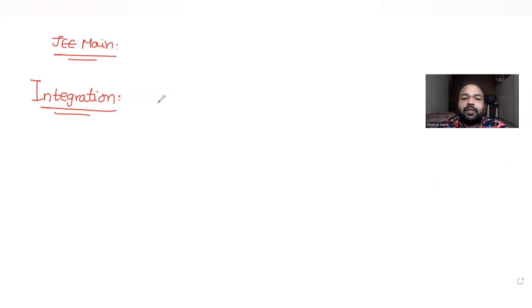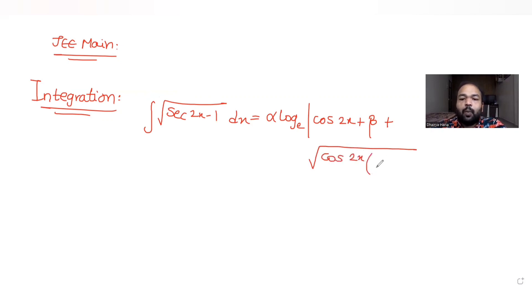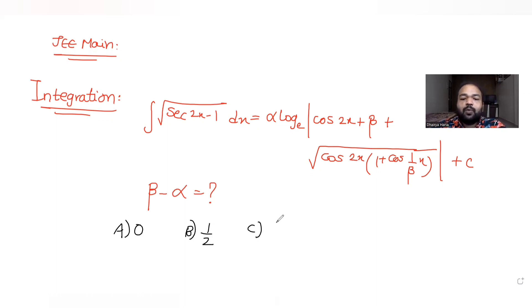If I talk about the question here, it tells us that the integral of root of (sec 2x minus 1) dx is equal to alpha times log to the base e of (cos 2x plus beta) plus root of cos 2x. We need to find the value of beta minus alpha. The four options given are: A is 0, B is half, C is 1, and D is minus 1.